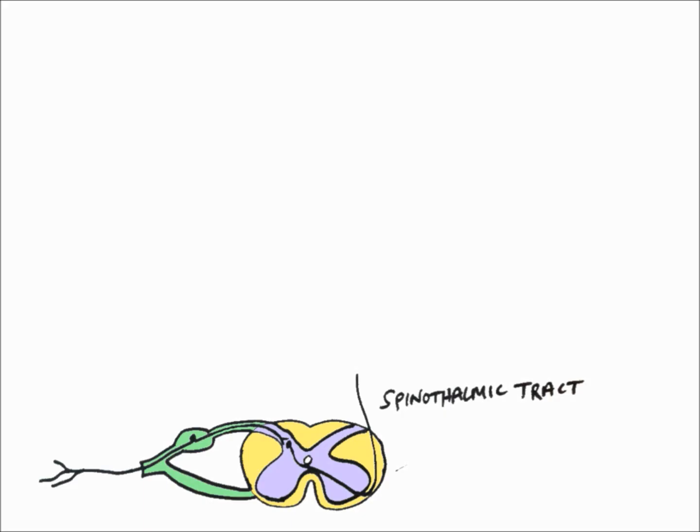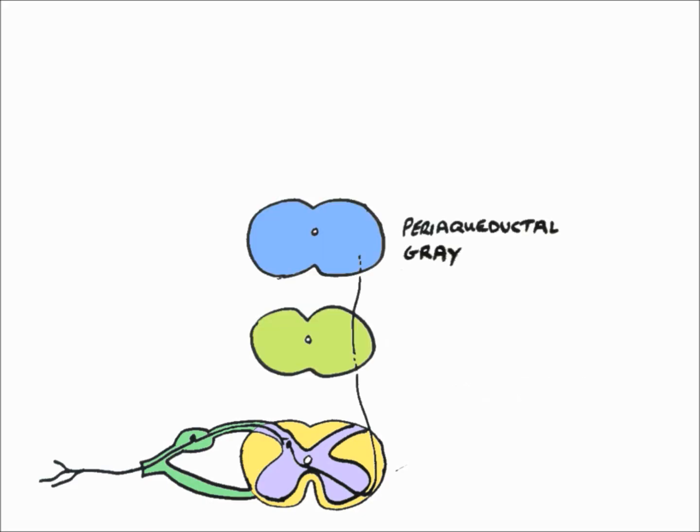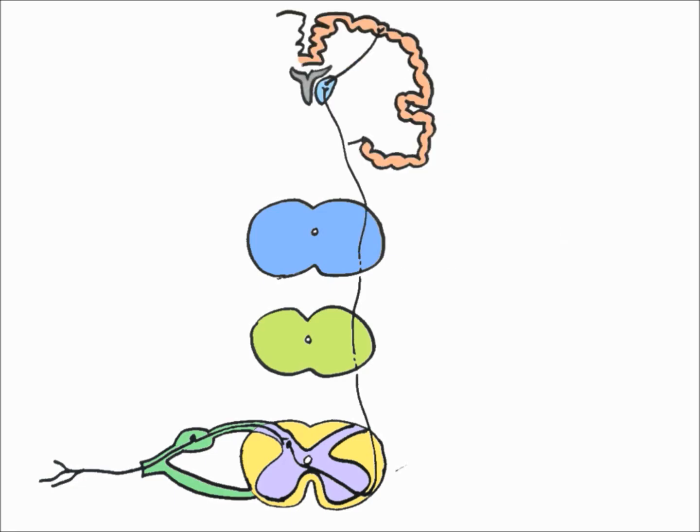the spinothalamic tract, medulla, periaqueductal gray of the midbrain, the thalamus, and the primary somatosensory area of the cerebral cortex.